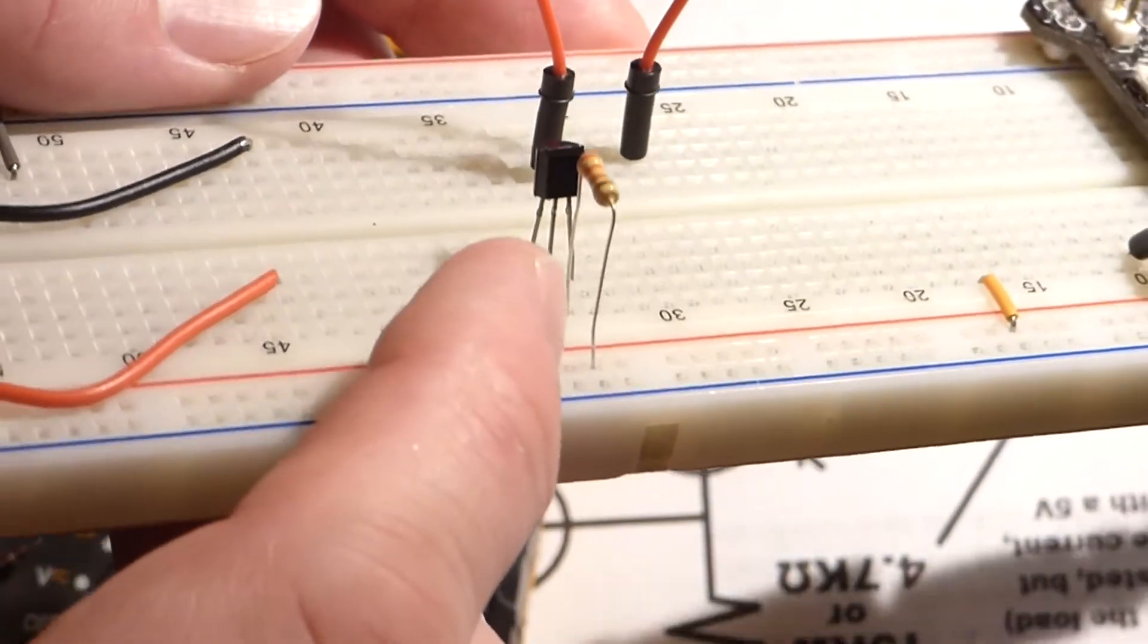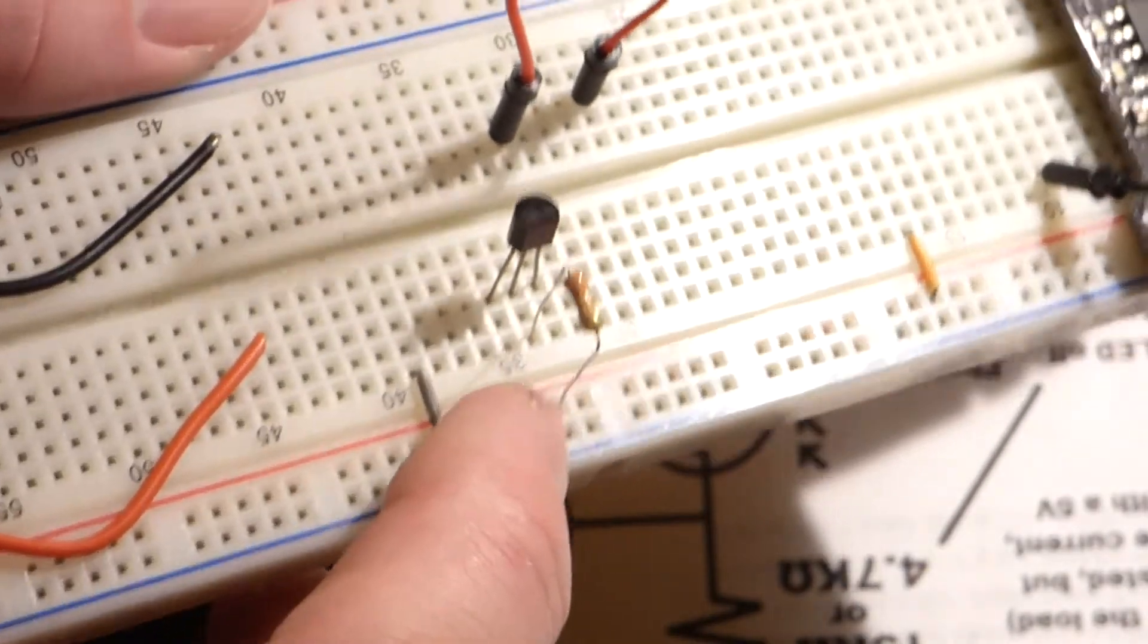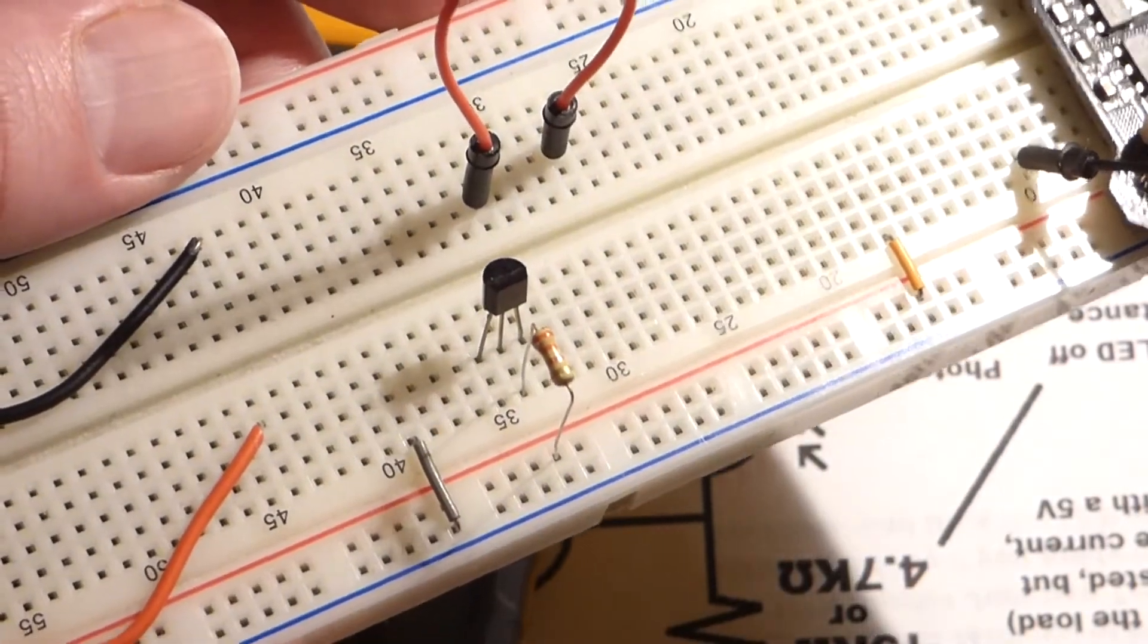You can see the three pins. The middle pin is connected to this resistor, which comes to the positive side of the power. We got a five volt power supply there, and the other two pins are floating right now.